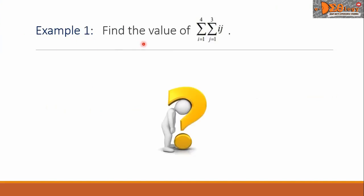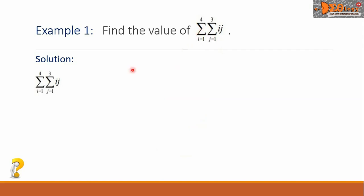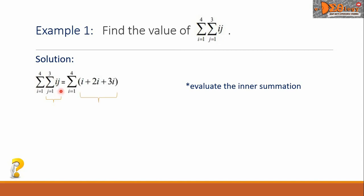Example one: find the value of these double summations. Let us copy our problem here. The rule says to evaluate the inner summation first. We're going to expand the inner summation by replacing the variable j with the numbers from one to three, so we have i plus two i plus three i. Then we copy the outer summation and simplify: i plus two i plus three i becomes six i, giving us a single summation.